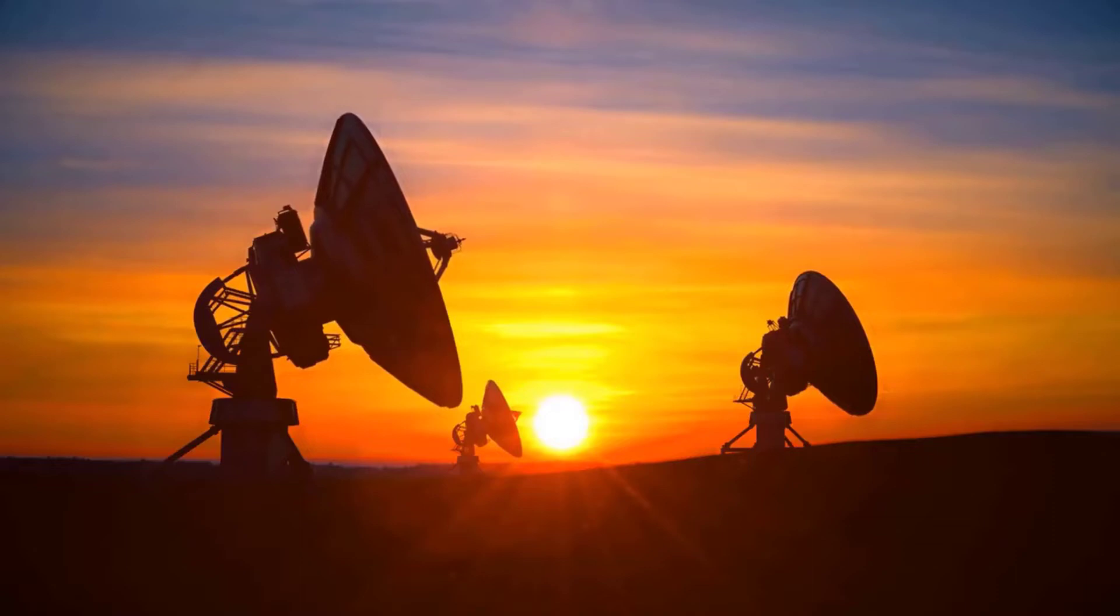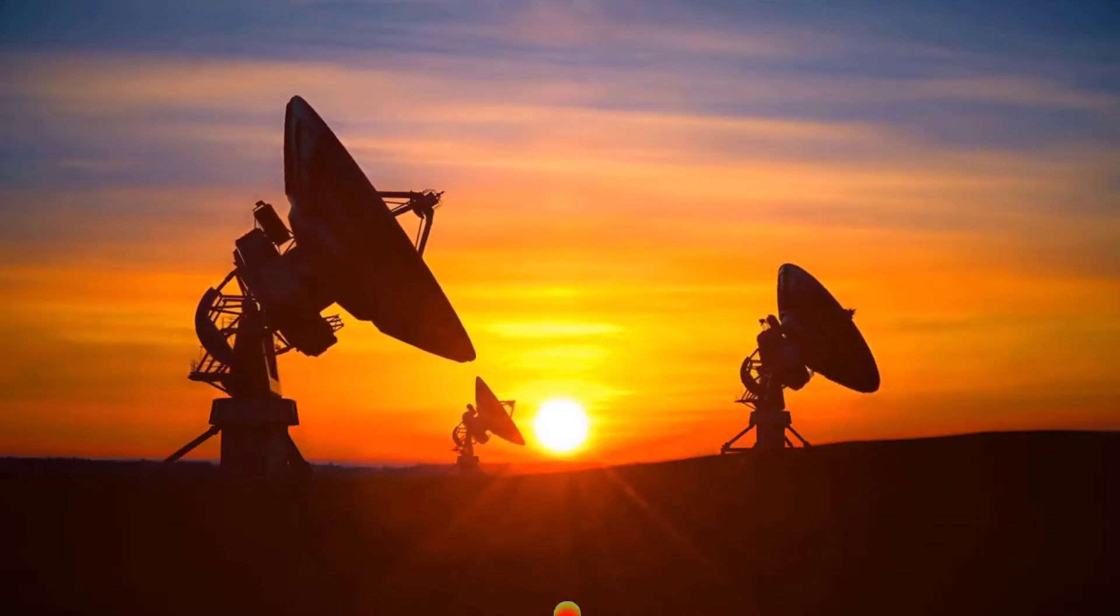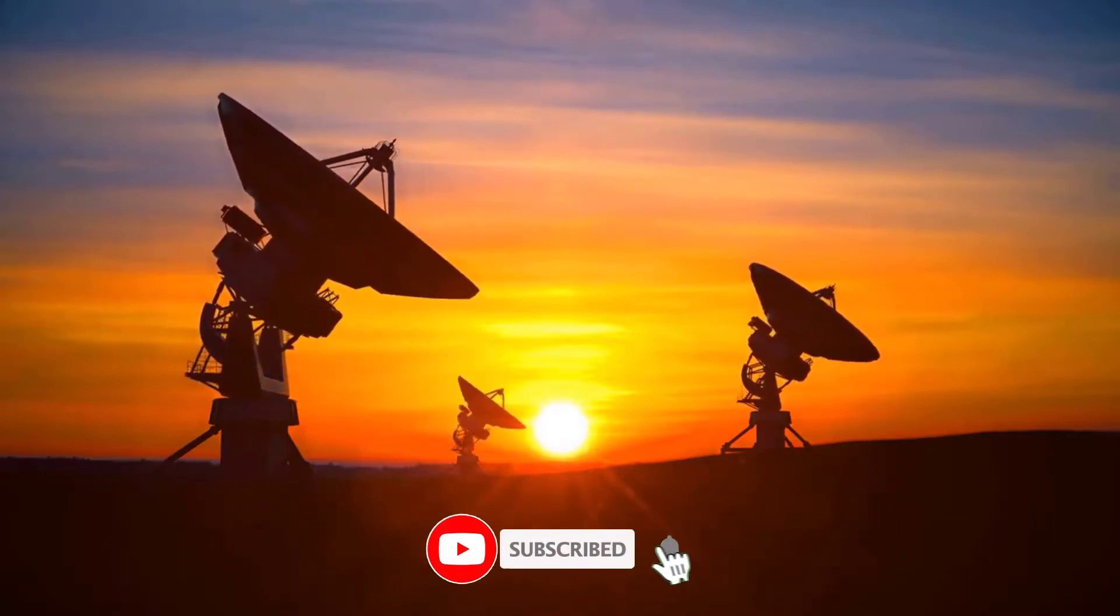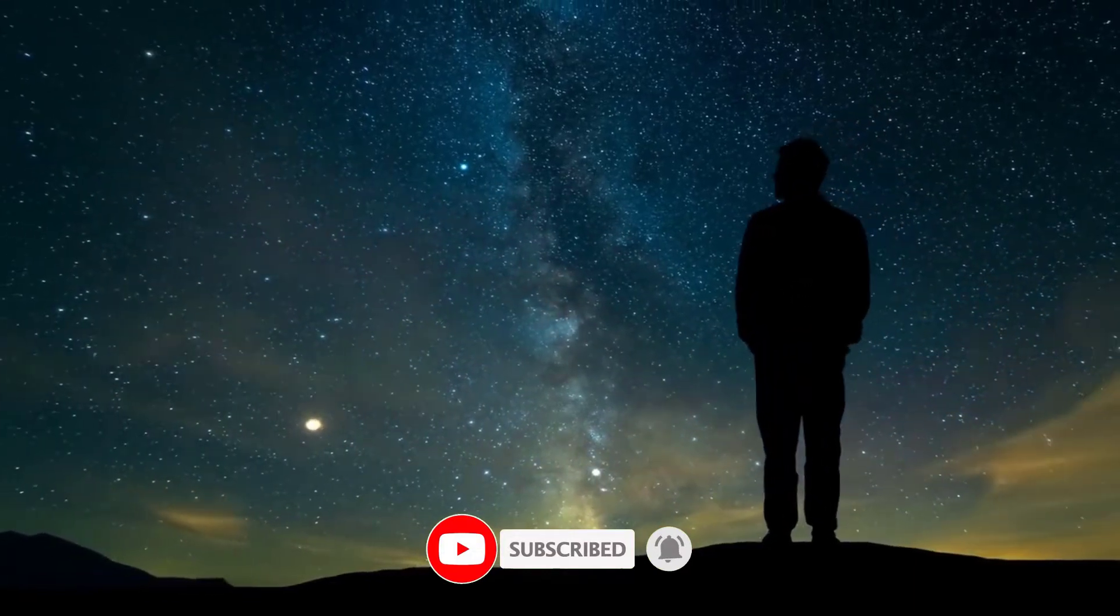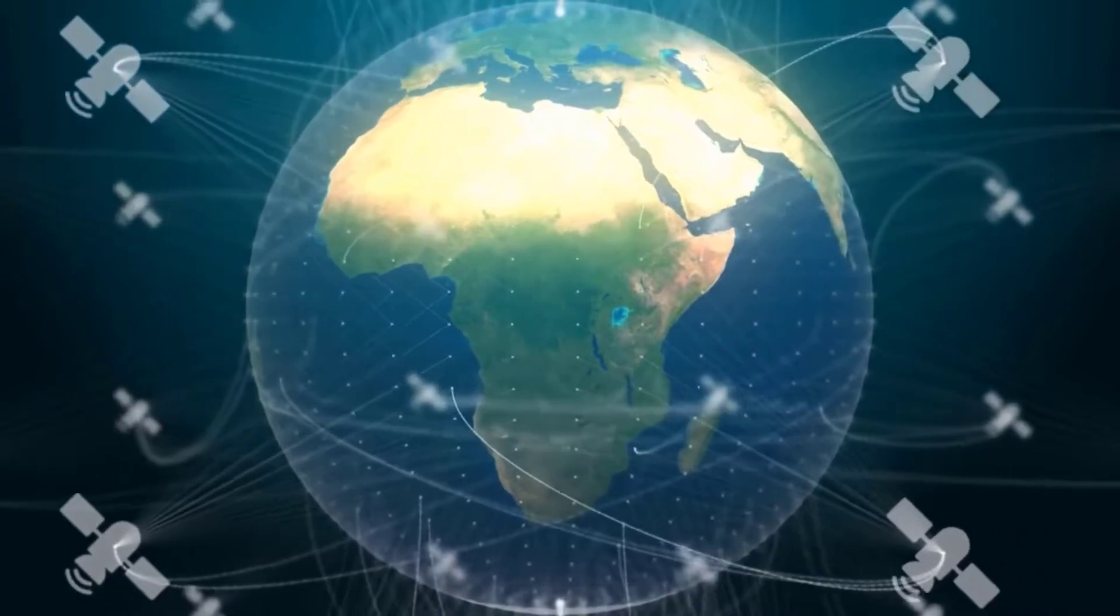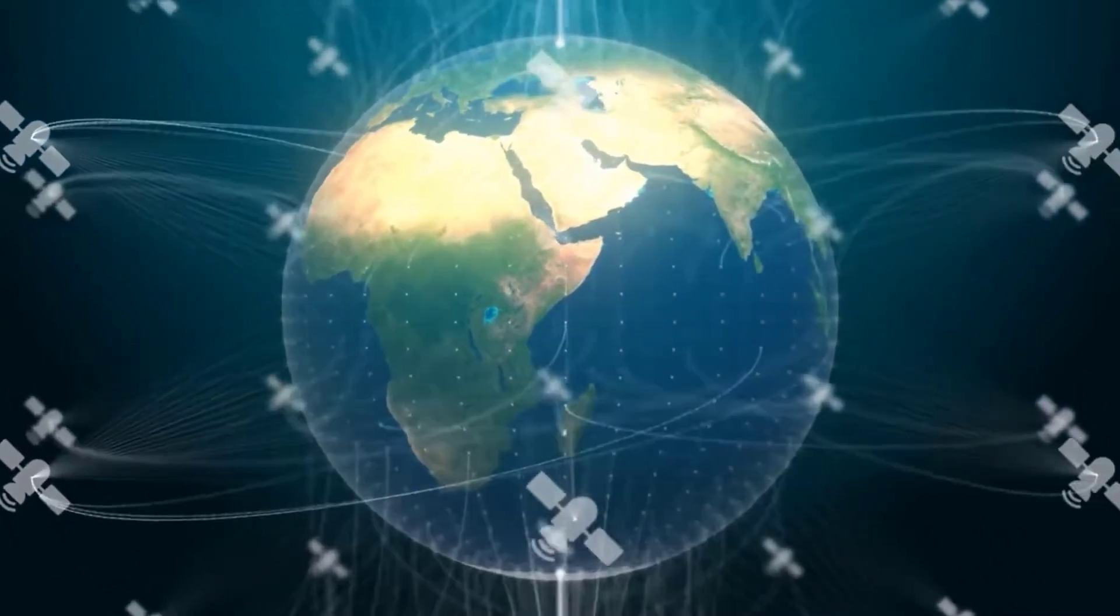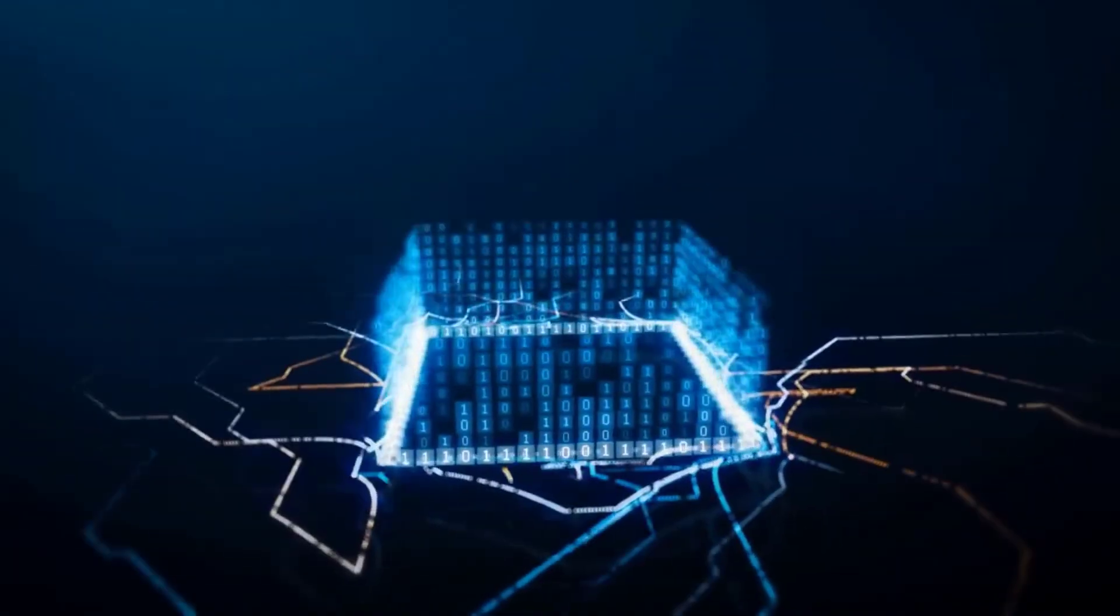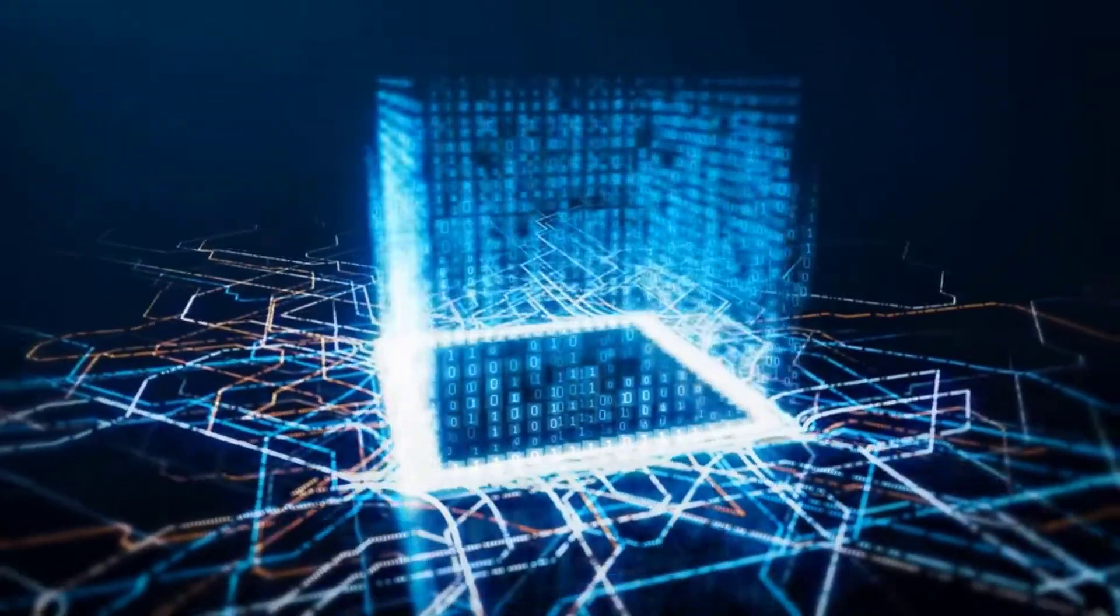The largest operational constellation is the Iridium system, which has 66 active satellites in orbit. Constellations are often launched as part of a larger satellite system. For example, the Iridium system was originally launched as part of the GlobalStar satellite system. However, the two systems are now operated independently.